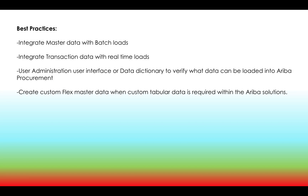Remember: always use batch loads for master data and real-time loads for transaction data. Use the administration user interface or data dictionary to verify what data can be loaded into Ariba procurement. Ariba provides a data dictionary in their administration tool containing all data sources and data structures. You can check what structure each integration has, what data Ariba is receiving, and what data you can download from Ariba - including fields, data types, and field lengths.